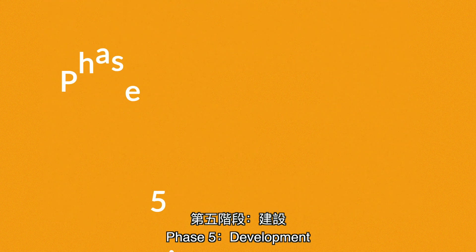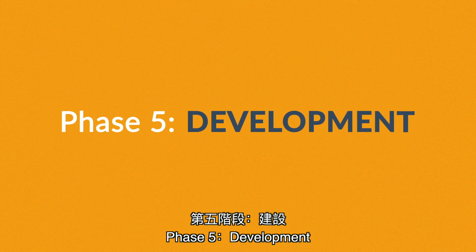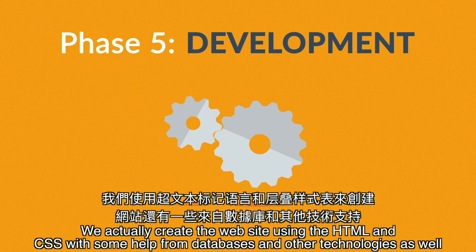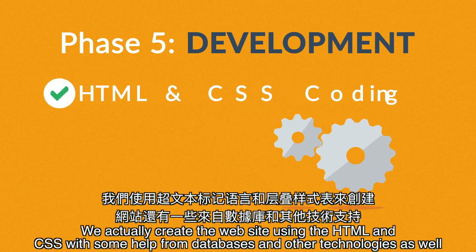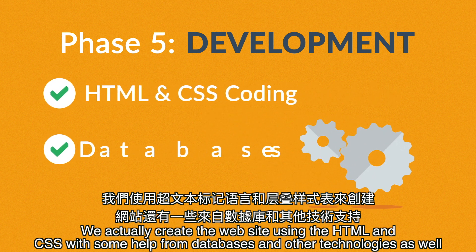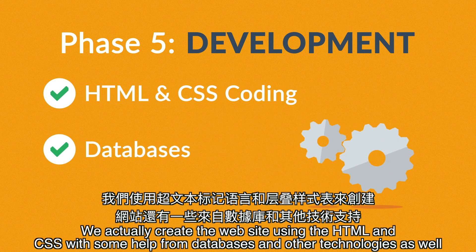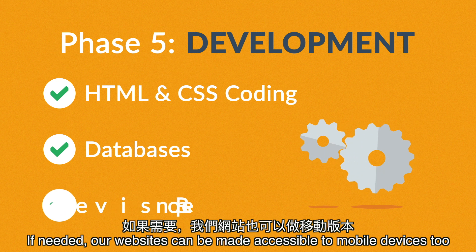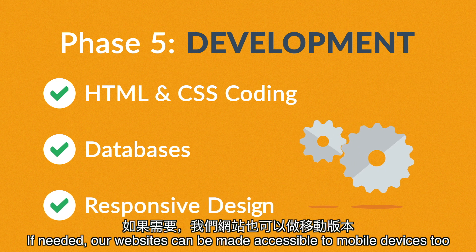Phase 5: Development. Here we actually create the website using the hypertext markup language and cascading style sheets, with some help from databases and other technologies as well. If needed, our websites can be made accessible to mobile devices too.